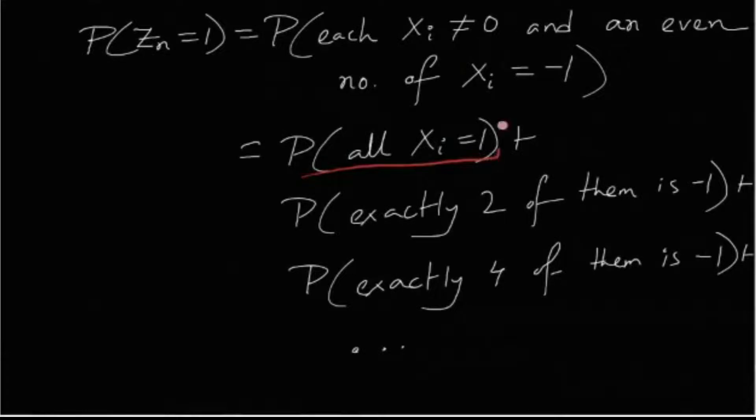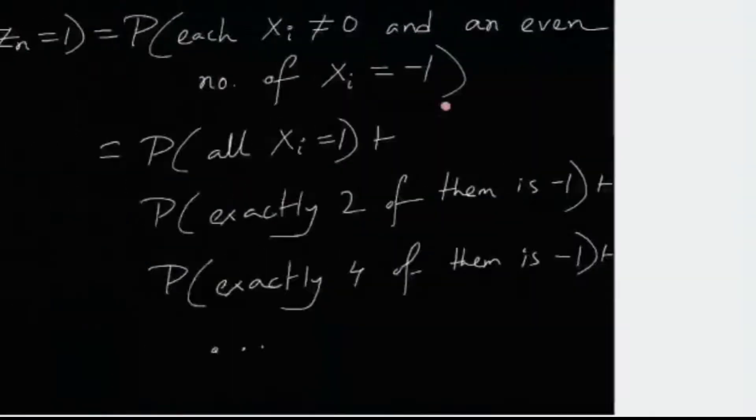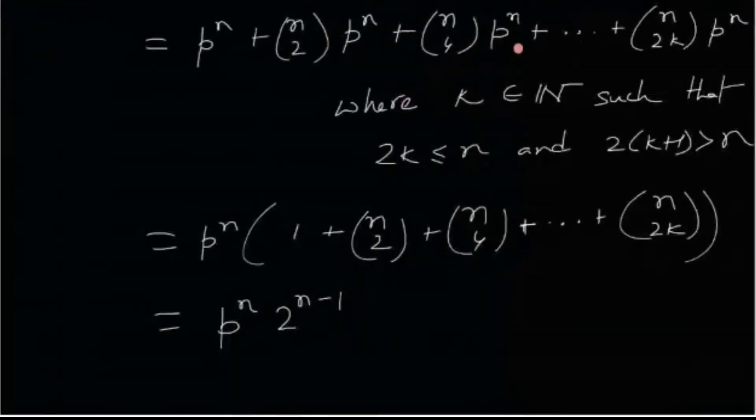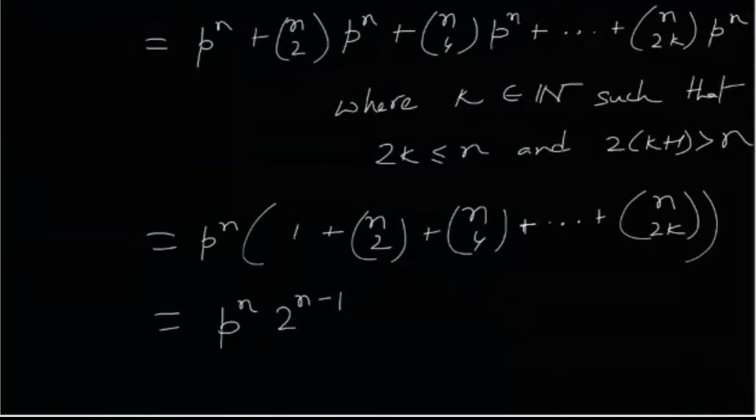So probability all of the xi's are 1 is p to the n. Again, exactly two of them being minus 1, it means that n choose 2 because we don't know which two of them is the minus 1 term. So n choose 2 times p to the n because the probability is the same. So n choose 2 times p to the n.